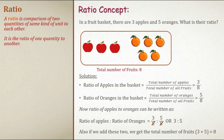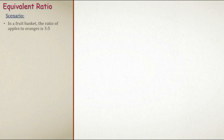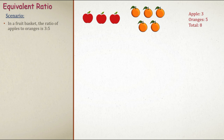If we add these two, we get the total number of fruits: 3 plus 5 equals 8. So out of 8 fruits, 3 are apples and 5 are oranges. Now let us understand equivalent ratio. The ratio of apples to oranges is 3 is to 5. If there are 3 apples there are 5 oranges, total fruits is 8. But if the total number of oranges is 20, we need to adjust — multiplying the ratio accordingly.